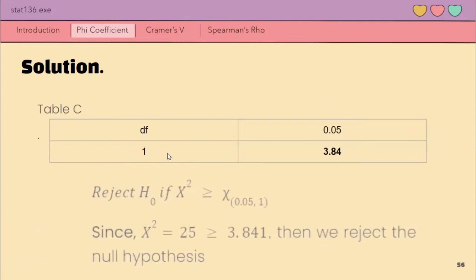Then, for the decision criterion, we reject the null hypothesis if x square is greater than or equal to 3.84. Itong 3.84 na ito is galing sa chi square table of values sa table C. Here with degrees of freedom equal to 1. Since x square is equal to 25 is greater than 3.84, then we reject the null hypothesis. This means that association is significant. As mentioned nga kanina, significant ang chi square test statistic niya, then significant din ang phi coefficient.